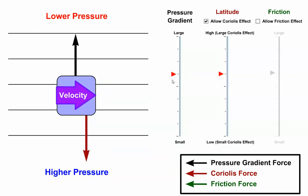But determining wind speed is more complicated than simply thinking about the pressure gradient force. If I hold the pressure gradient force constant and change latitude, look what happens to the velocity vector.